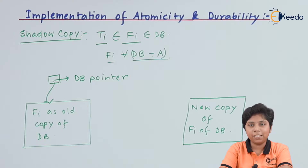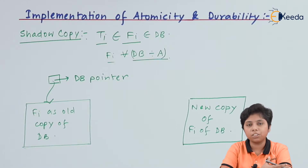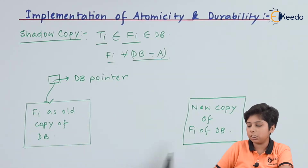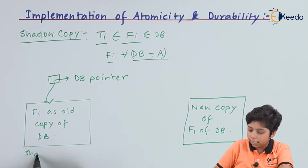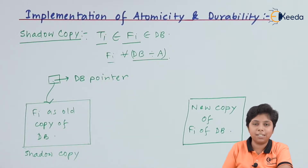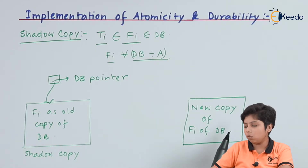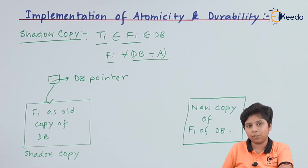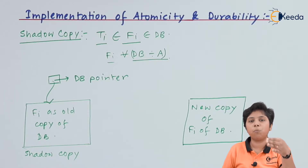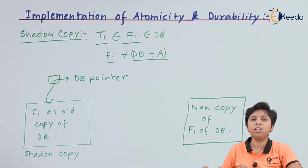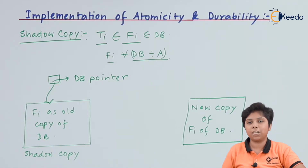We have now made a new copy. When there is any update, modification, or access from the transaction to this database, it will be made to this new copy, not the shadow copy. The original Fi now becomes the shadow copy of the database. When this new copy is made, all updates or modifications will be made to it, and the DB pointer will point to this new copy while leaving the old copy as the shadow copy.